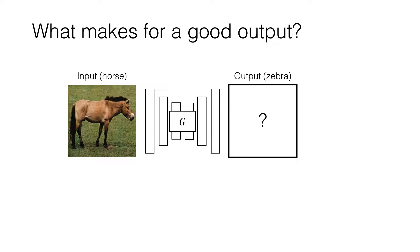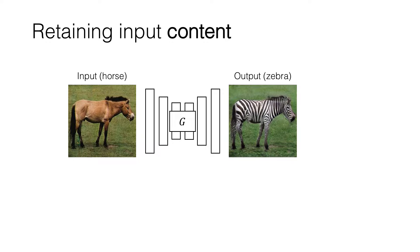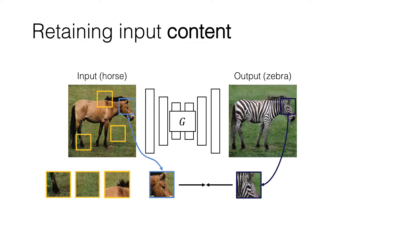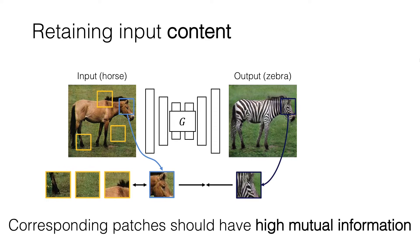A key aspect of a successful image translation is whether the output faithfully reflects the content of the input. For example, in this result, the zebra head should be close to the horse head relative to other input patches. In other words, corresponding patches should have high mutual information.